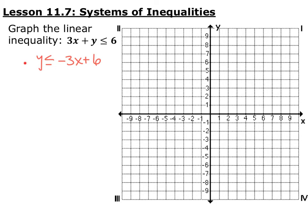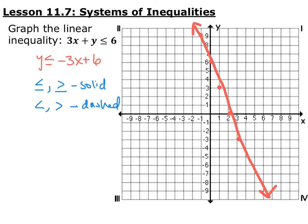So we graph this line just like we normally graph a line, but you have to remember is it going to be a solid line or is it a dotted line? For this one it's going to be a solid line because we have an or equal to.